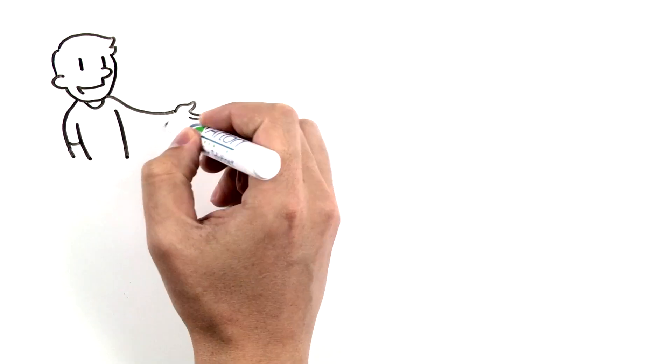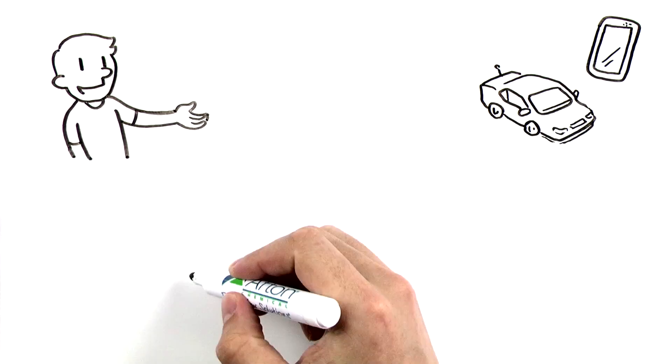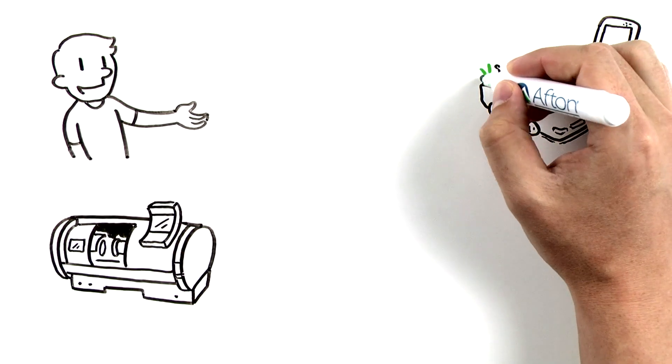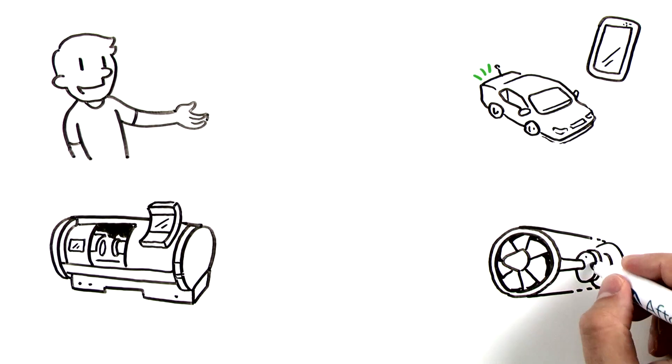Behind every machine you use is a host of industrial machines that made and power it. From the metalworking machines that create the parts in your vehicle to the gas turbine that generates the power to charge your smartphone.